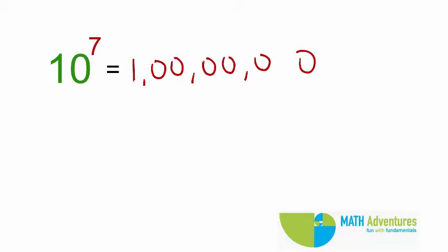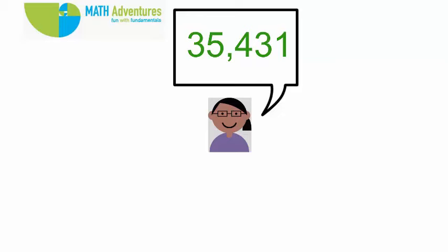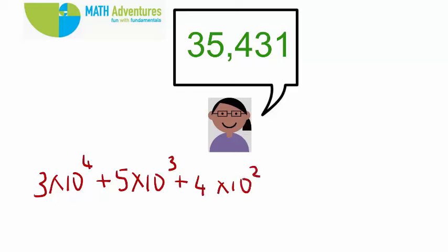Can we write the expanded form of 35,431 using power notation? Is it not 3 into 10 to the power of 4 plus 5 into 10 cube plus 4 into 10 square plus 3 into 10 to the power of 1 plus 1 into 10 to the power of 0?